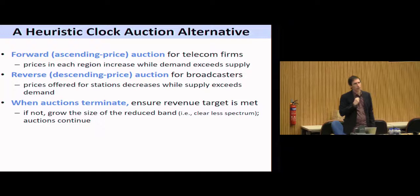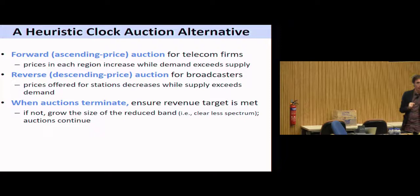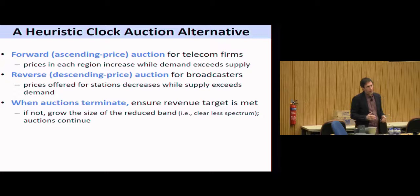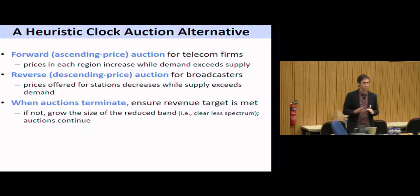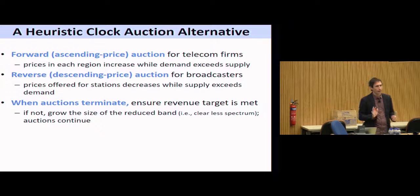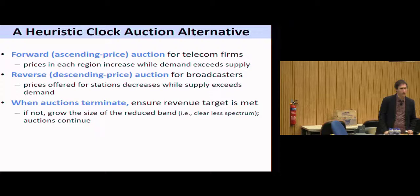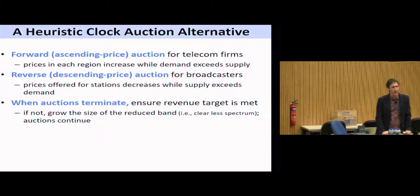The auction is dominant strategy truthful for TV stations if each acts independently. Many don't — many are owned by large companies like Comcast. Some hedge funds were also trying to buy sets of TV stations to bid collusively. Explicit collusion is illegal under US law. But implicit collusion — where a single owner coordinates many participants — isn't really collusion, it's just being a complicated company. That causes problems for formal incentive guarantees. We tried to argue it wouldn't distort the market too severely, and post-hoc analysis suggests it wasn't so bad, but nothing formal guarantees that.